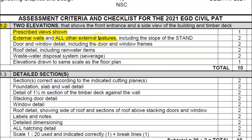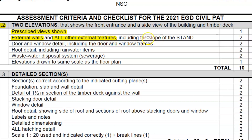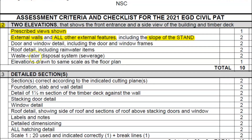The finished floor level, your deck, and the slope of the stand must all be indicated, which I will show you. Include the door and window detail — do not forget the actual window sill. Include the door and window frames, which are a double line at the windows. Your roof detail should include the barge board, fascia boards, down pipes, rainwater items, and your wastewater disposal system and sewer.